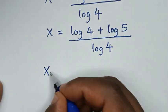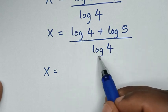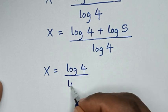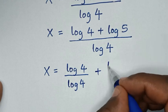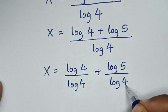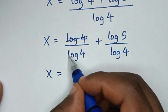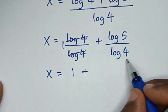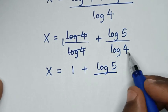So x equals — we'll divide by log of 4 in each part — it will be log of 4 over log of 4, plus log of 5 over log of 4. Then log of 4 divided by log of 4 is 1, so it will be 1 plus log of 5 over log of 4.